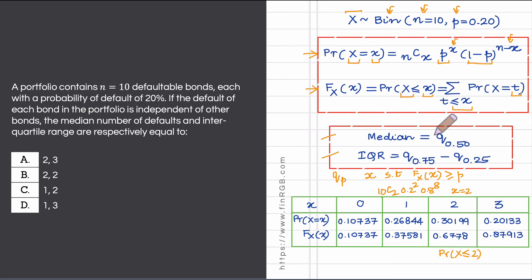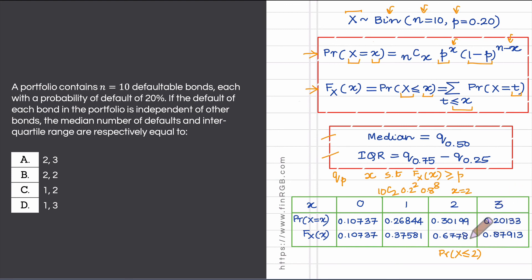The 0.75 quantile is X = 3, because at X = 3 the CDF jumps from 0.6778 to 0.87913, first exceeding 0.75. The 0.25 quantile is X = 1. Therefore, the median is 2, and the interquartile range is 3 − 1 = 2. So B is the correct answer.